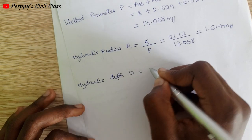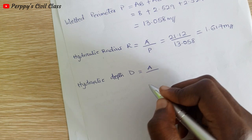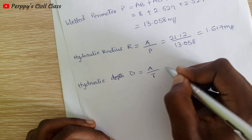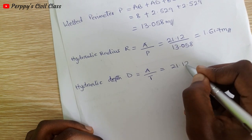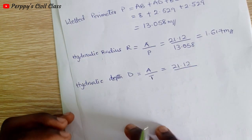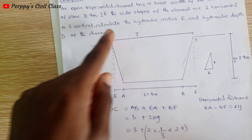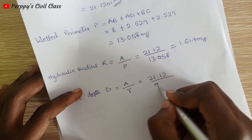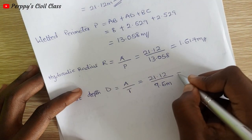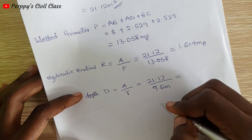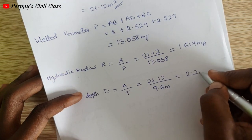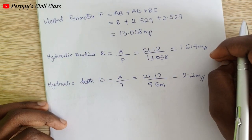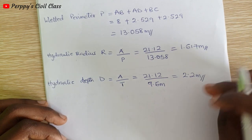Finally, the hydraulic depth D is given by the area of flow divided by the top width. D = 21.12 / 9.6 = 2.2 meters. So our final answers are: hydraulic radius R = 1.617 meters, and hydraulic depth D = 2.2 meters.